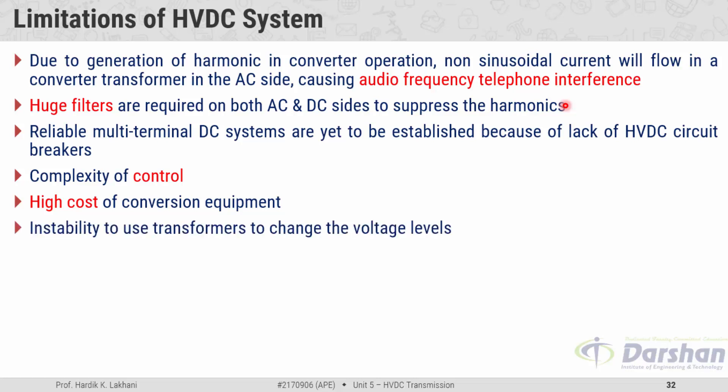Additional limitations include the inability to use transformers to change voltage levels easily, and more maintenance is required in the AC parts of the HVDC system. Furthermore, HVDC is not economical for short distances — for distances less than the break-even distance, the AC system is far better in terms of cost. So for short distances, HVDC systems are not preferable.